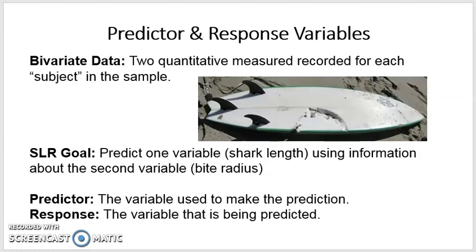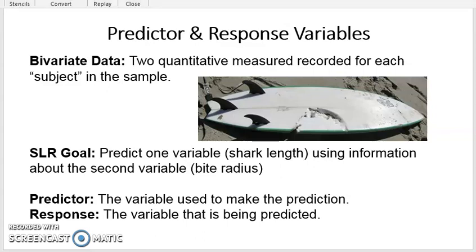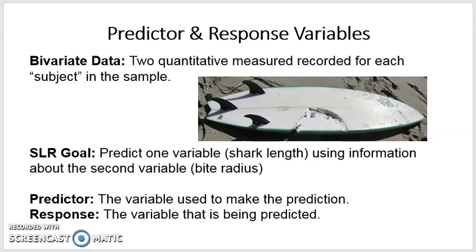Just a little overview of regression. Regression is a tool that's used with bivariate data, and bivariate data is data that consists of two quantitative measures recorded on each subject in the sample. So in this example, you see a situation that's becoming problematic in Australia, and that is shark attacks. They've got a growing number of shark attacks on surfers in particular. You see this surfboard and the bite mark on the surfboard.